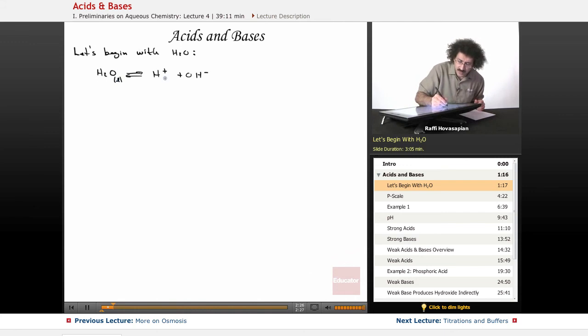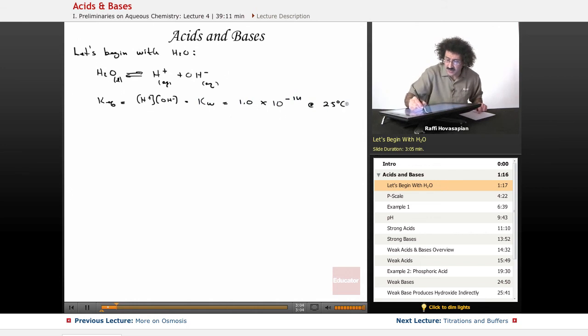Let me put some state symbols here. This is AQ and this is AQ. When we have liquids or solids, they actually don't show up in the equilibrium expression. In this case, our KEQ is going to equal the concentration of H+ times the concentration of OH-. This is liquid, so it doesn't show up in the denominator. We call this, because it's for water, we give it a special symbol, KW. We've measured this, and it's actually equal to 1.0 times 10 to the negative 14 at 25 degrees Celsius.